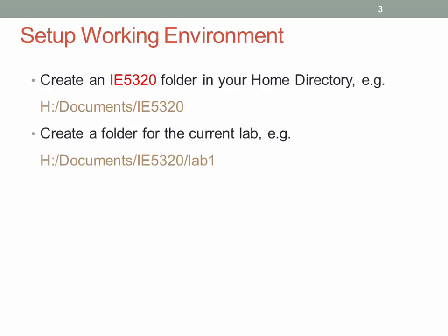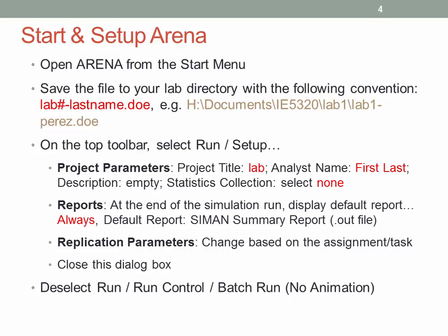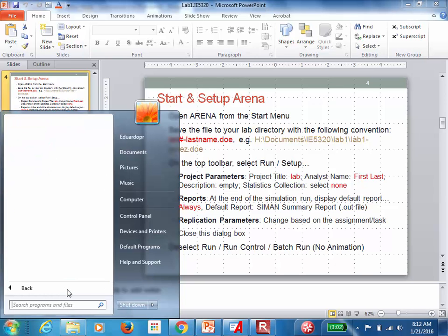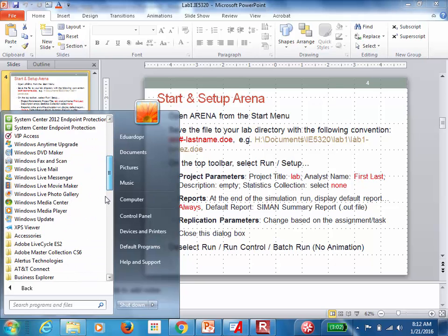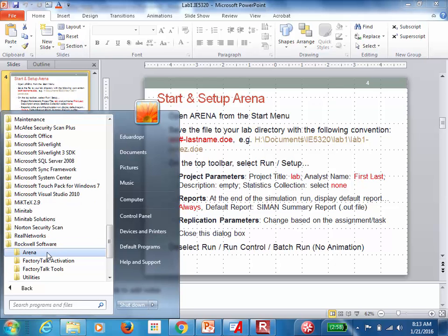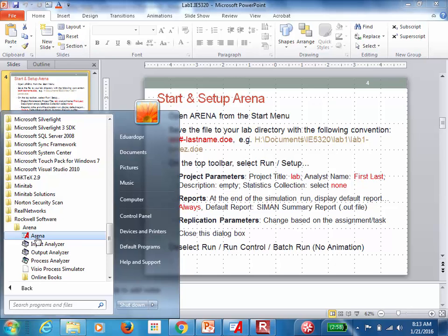This could be your home directory, your desktop — anywhere you can find the information you're storing for the class. You're going to be uploading this to Trax, so it's very important that you save these labs. Once you've created that directory, we can open Arena from the start menu. If you go to Start and Programs, there's going to be a folder called Rockwell Software, and inside that there's another folder called Arena — that's the software we're looking for.